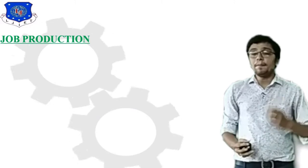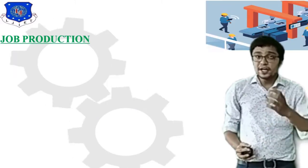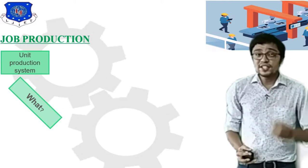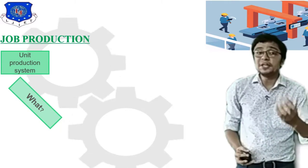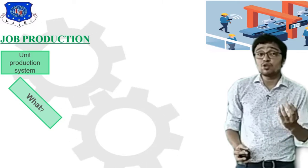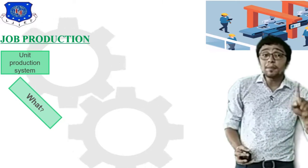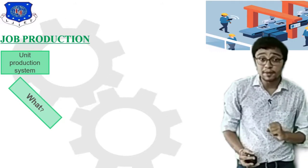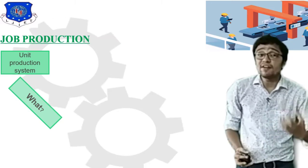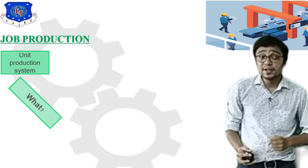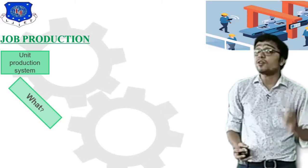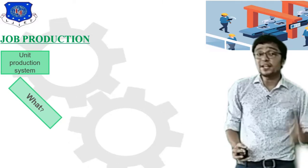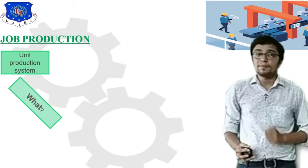The first important topic is Job production. Job production is basically a Unit production system — only one job is to be produced. It depends on heavy duty work pieces and takes much time. It is the conversion of raw material into a final product, but only one product at a time. This is what Job type production system.